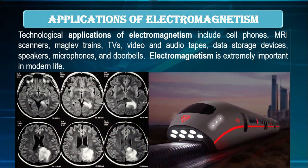These are some applications of electromagnetism. Technological applications include cell phones, MRI scanners, maglev trains, TV, video and audio tapes, data storage devices, speakers, microphones, and doorbells. Electromagnetism is extremely important in modern life.